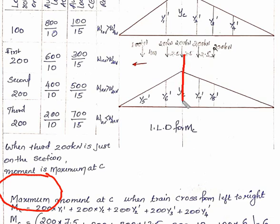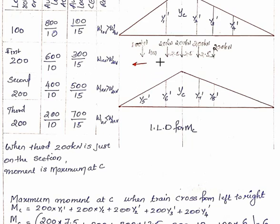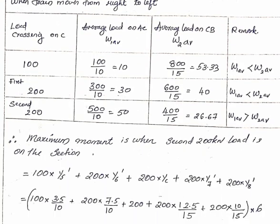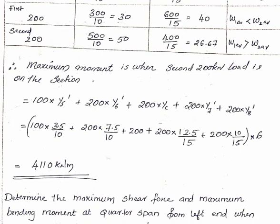For the second 200 kN load at section C, we calculate the y-c value using (Z/L) × (L - Z)/L. Using similar triangles, we find ordinates y5', y6', yc, y7', y8'. The maximum moment is: 100×y5' + 200×y6' + 200×yc + 200×y7' + 200×y8'. The maximum bending moment when load moves from right to left is 1110 kN·m.